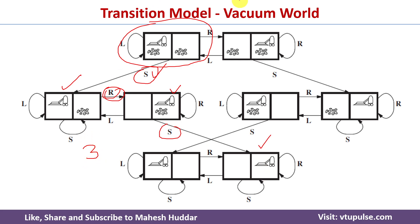So in this video I have discussed how to draw a transition model for the vacuum world example. I have already discussed how to define the vacuum world problem using six different components in artificial intelligence — the link for that video is given in the description below. If you like the video, please like and share with your friends, press the subscribe button for more videos, and press the bell icon for regular updates.